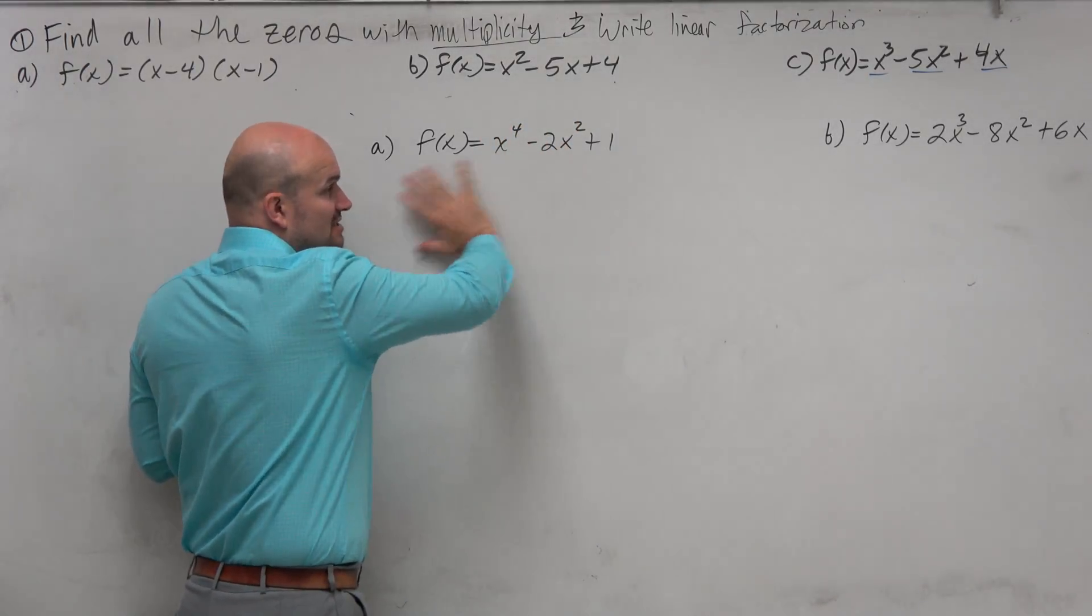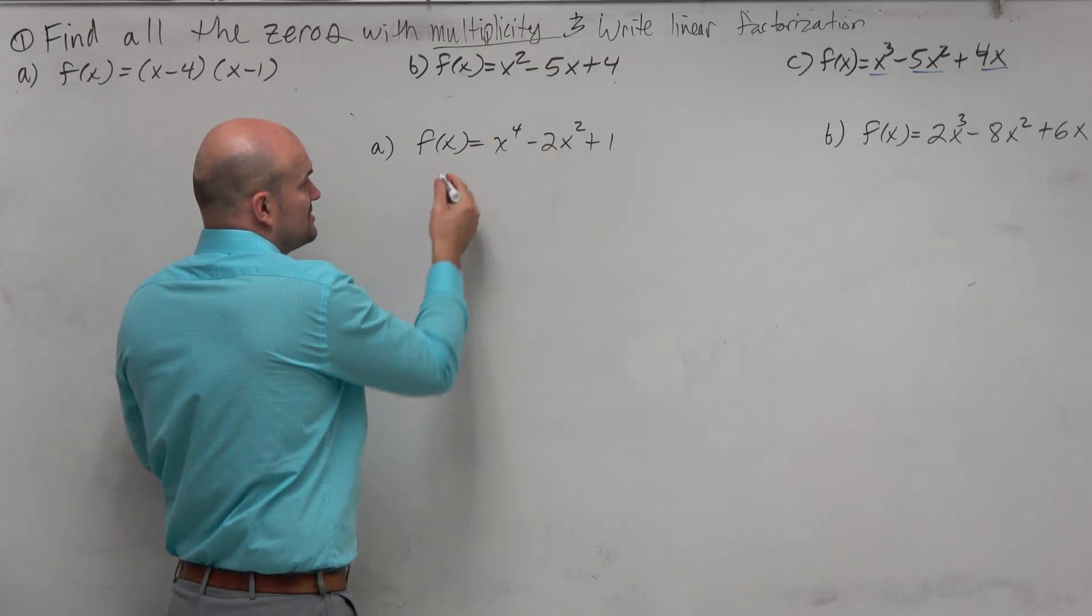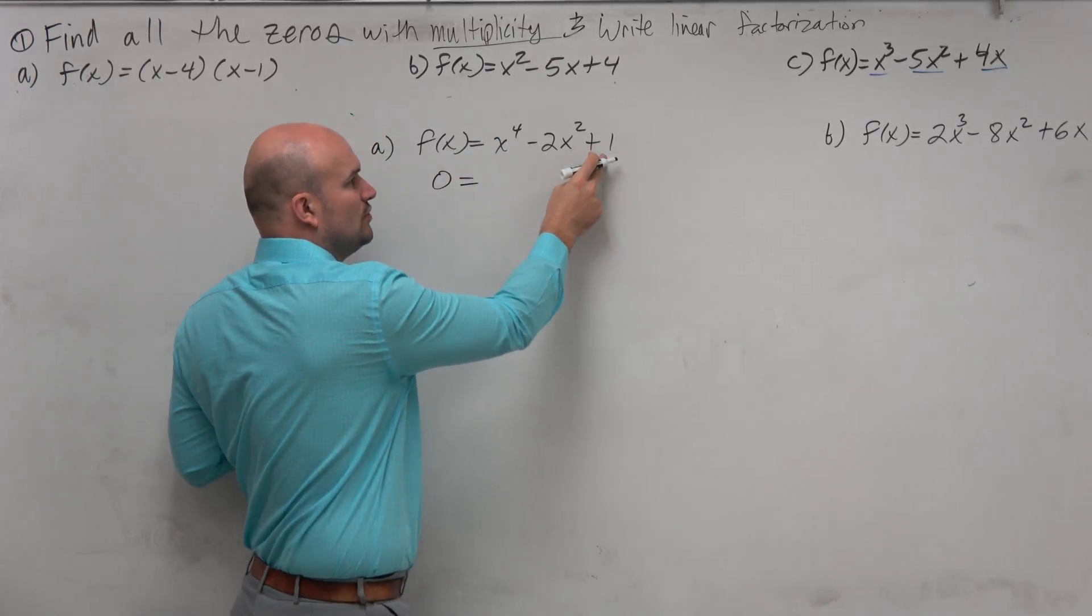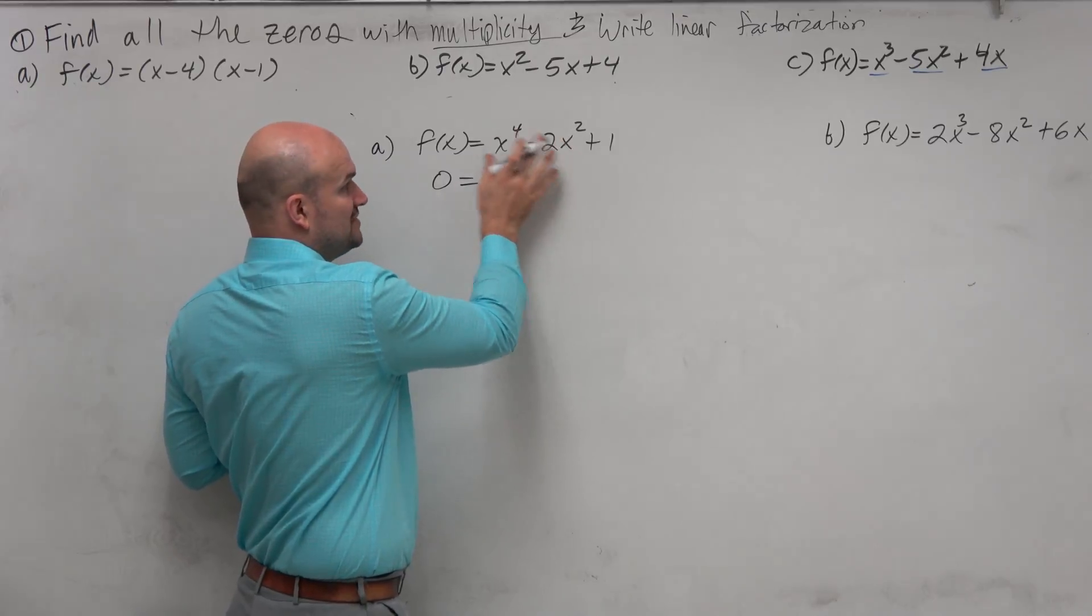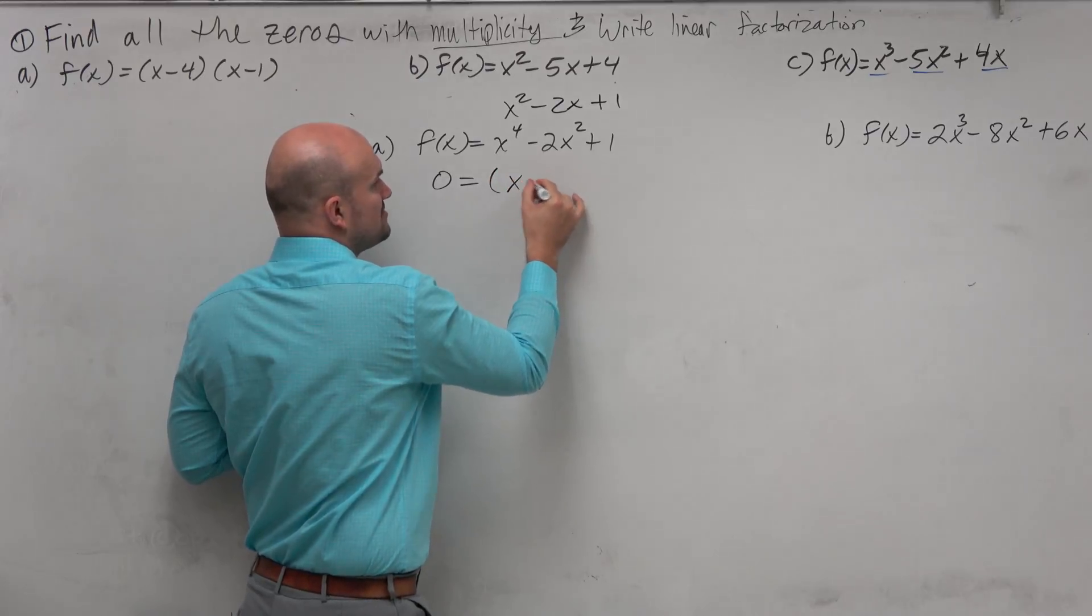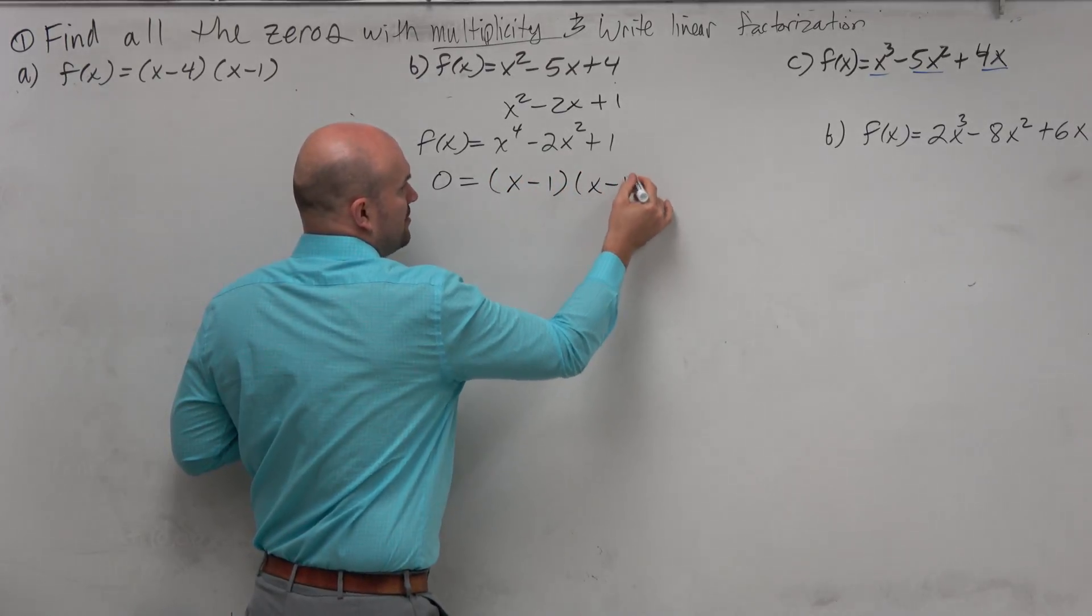So we can just factor this like it's a quadratic and then raise the powers. So if I look at this, I can see, well, what two numbers multiply to give me a positive 1, add to give me a negative 2? And if this was a quadratic, x squared minus 2x plus 1, I would say my factors would be x minus 1 times x minus 1.